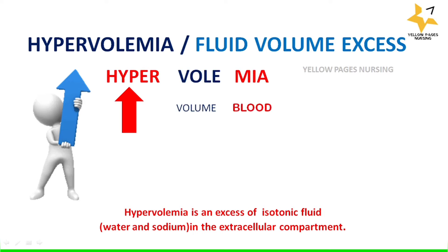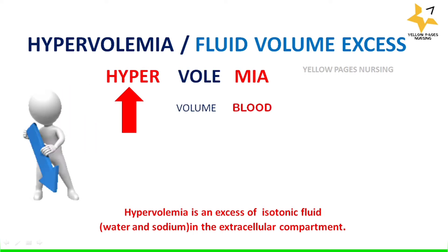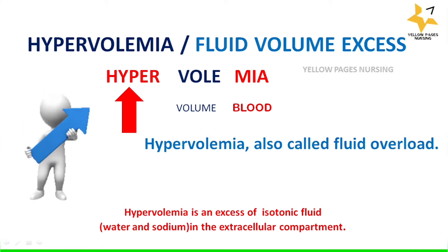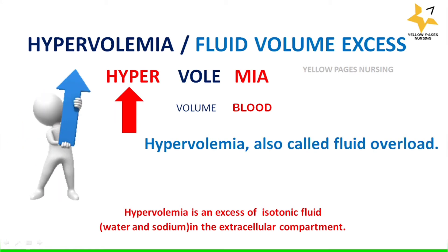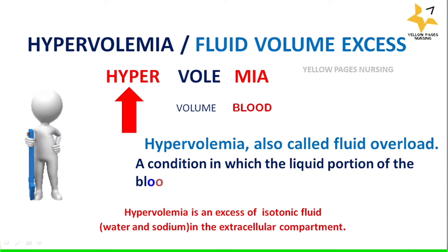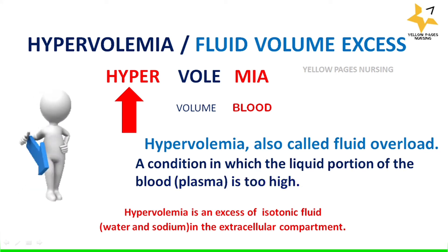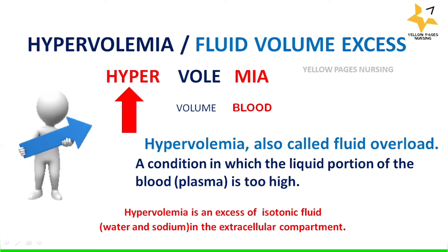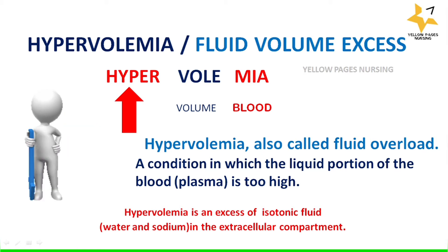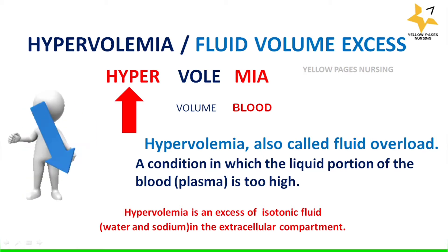Hypervolemia refers to increasing blood volume. It is also called fluid overload — a condition in which the liquid portion of the blood, that is plasma, is too high. Hypervolemia is an excess of isotonic fluid, that is water and sodium, in the extracellular compartment.